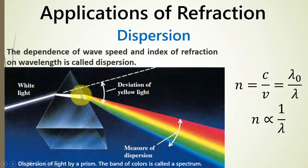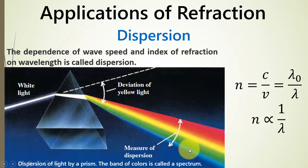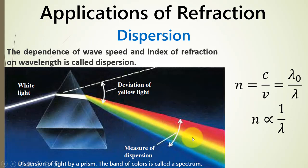Each wavelength travels at a different speed, and this difference in speed causes splitting of the white light into its colors. We will have more bending for the blue color than green, yellow, and red. The order is actually violet at one end, then indigo, blue, green, yellow, orange, and red. So we will have a spectrum of colors.